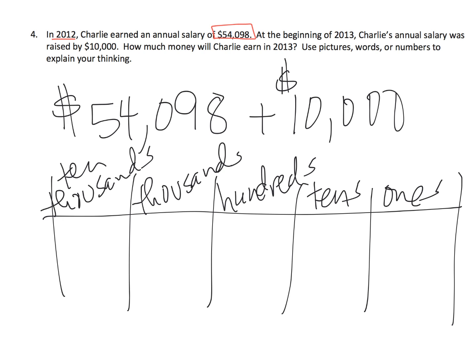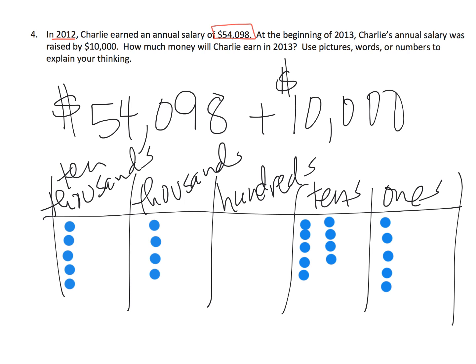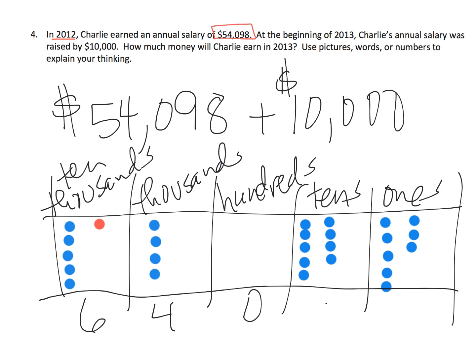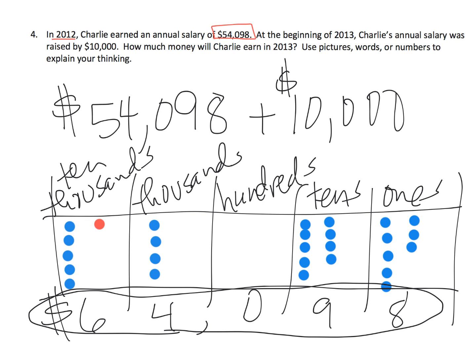Let's model this number: five in the ten thousands, four in the thousands, nothing in the hundreds, nine in the tens, and eight in the ones — using vertical ten frames. Now we're going to add ten thousand, so we put one more in the ten thousands place. That gives us six in the ten thousands and everything else stays the same, so Charlie earns sixty-four thousand ninety-eight dollars.